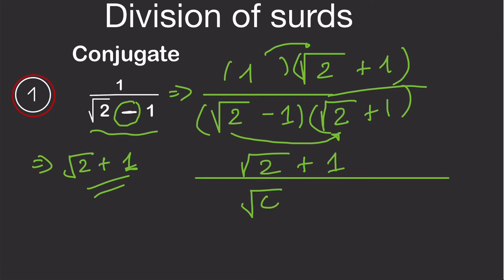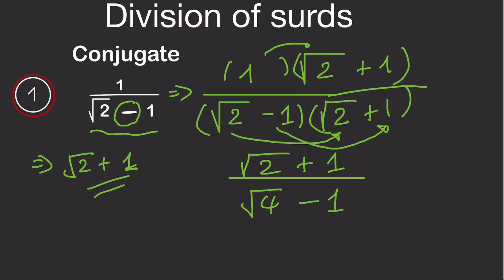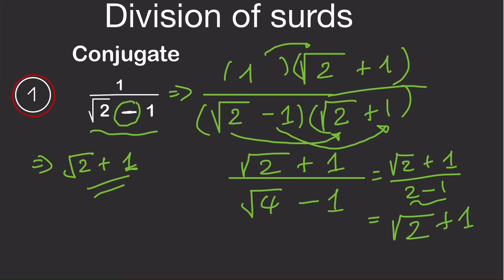Using difference of two squares: root 2 times root 2 gives us root 4, and minus 1 times 1 gives minus 1. The square root of 4 is 2, so the denominator becomes 2 minus 1, which equals 1. Any number divided by 1 remains the same, so the answer is root 2 plus 1.